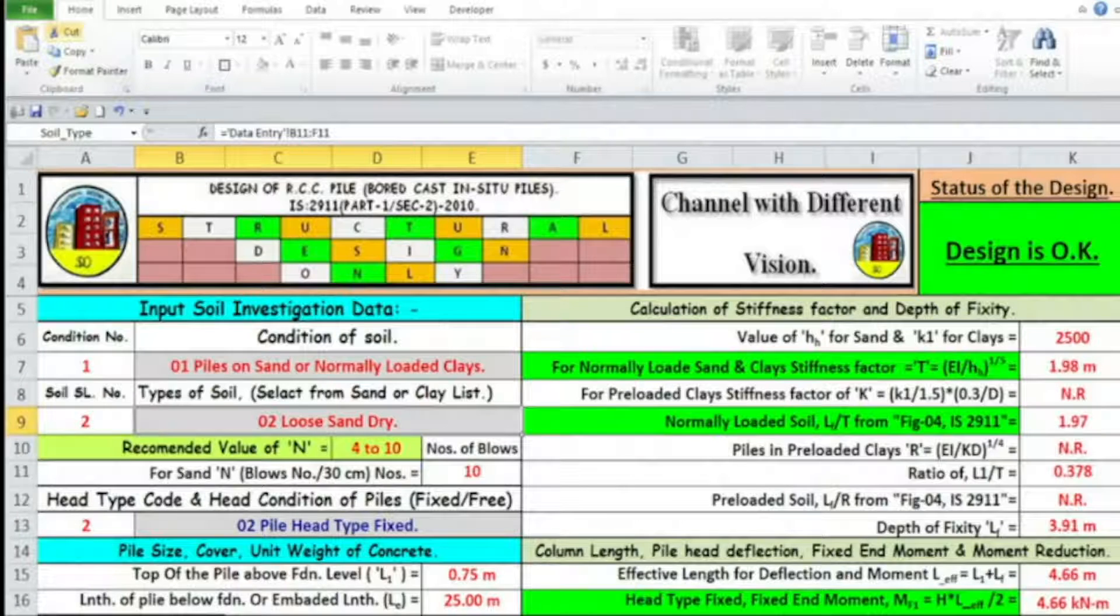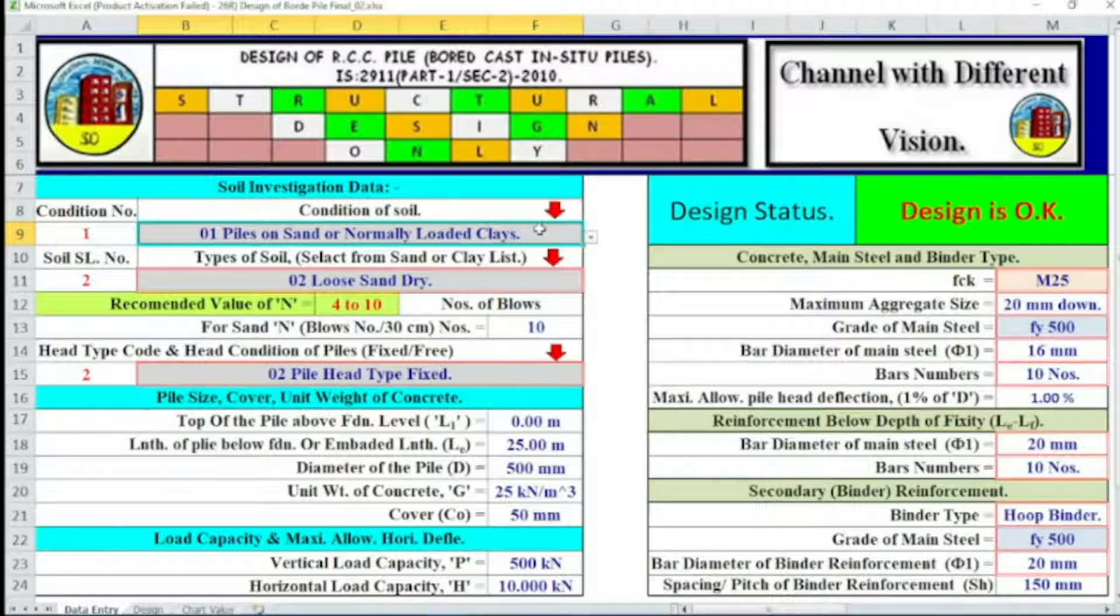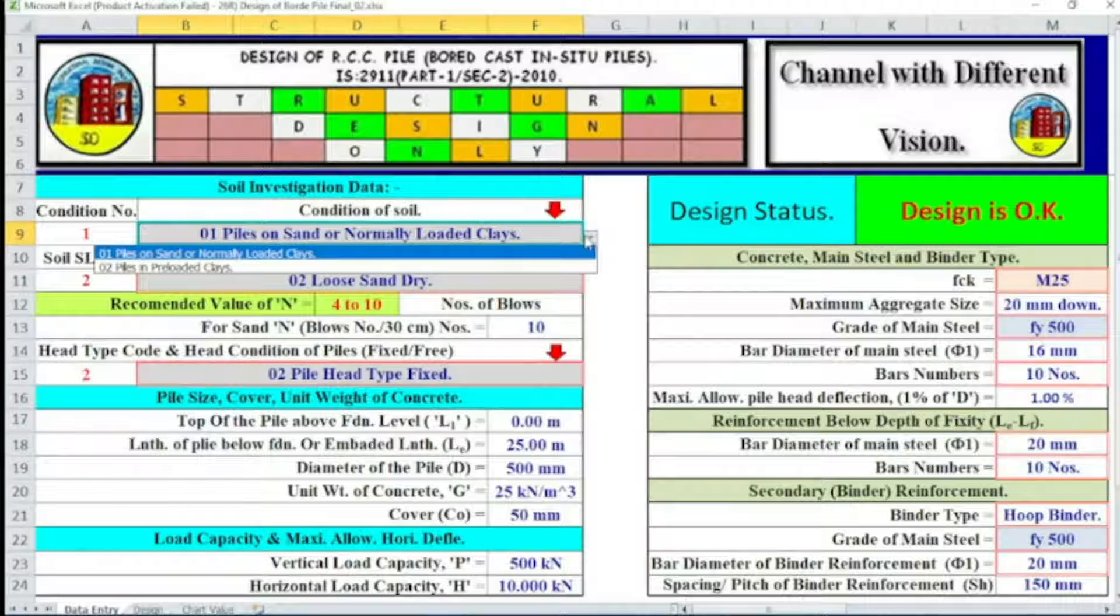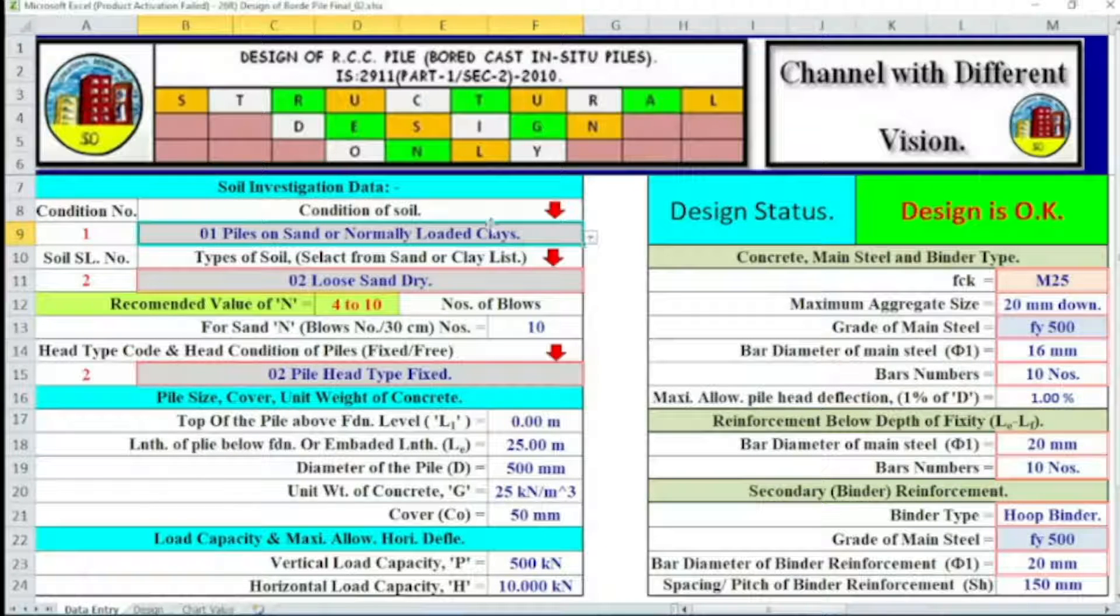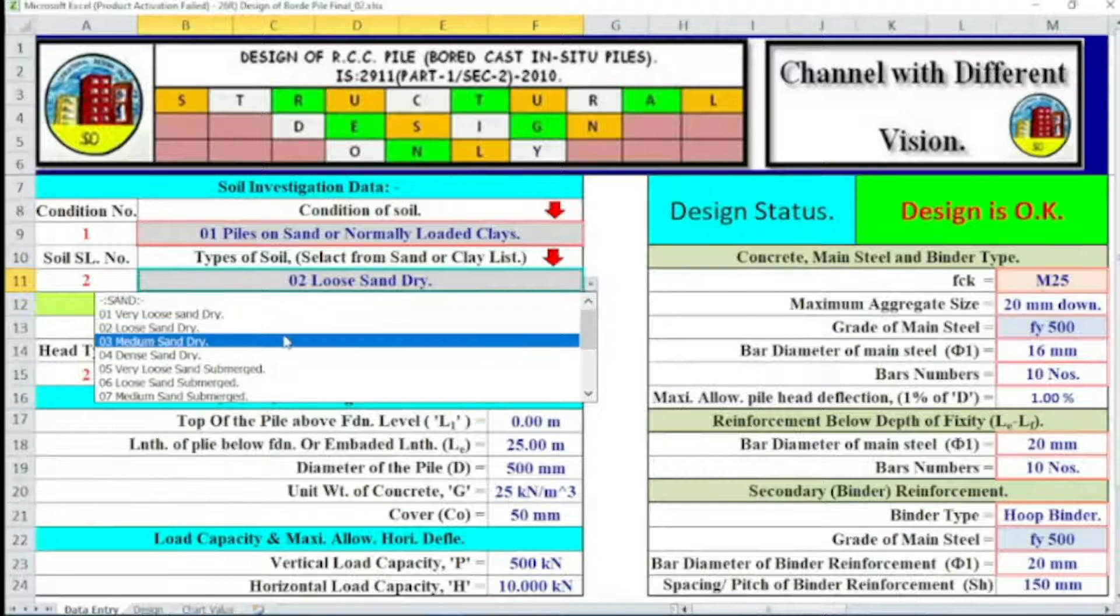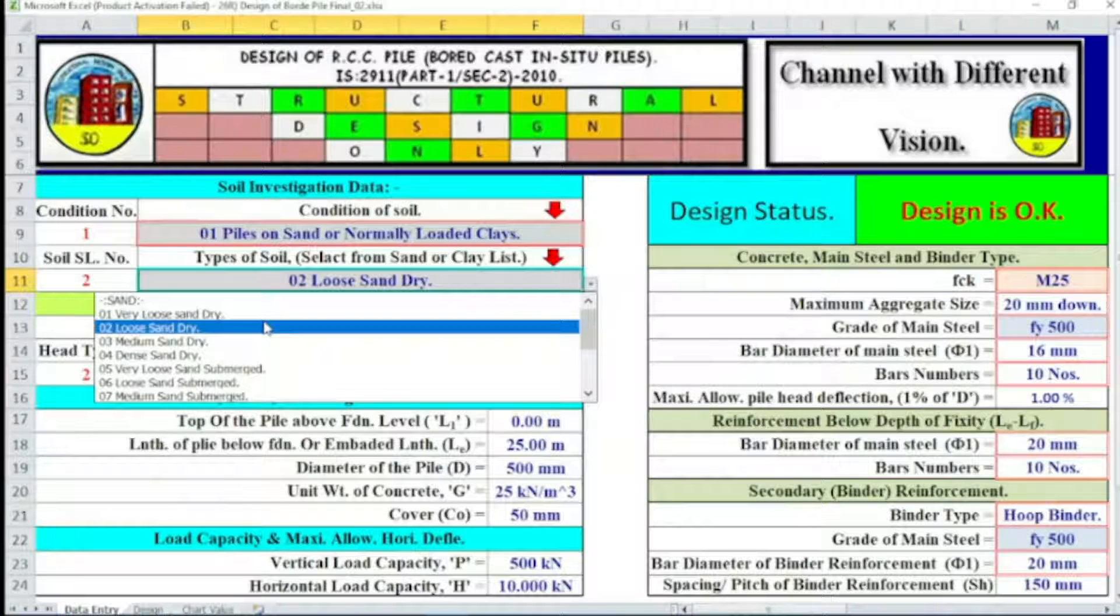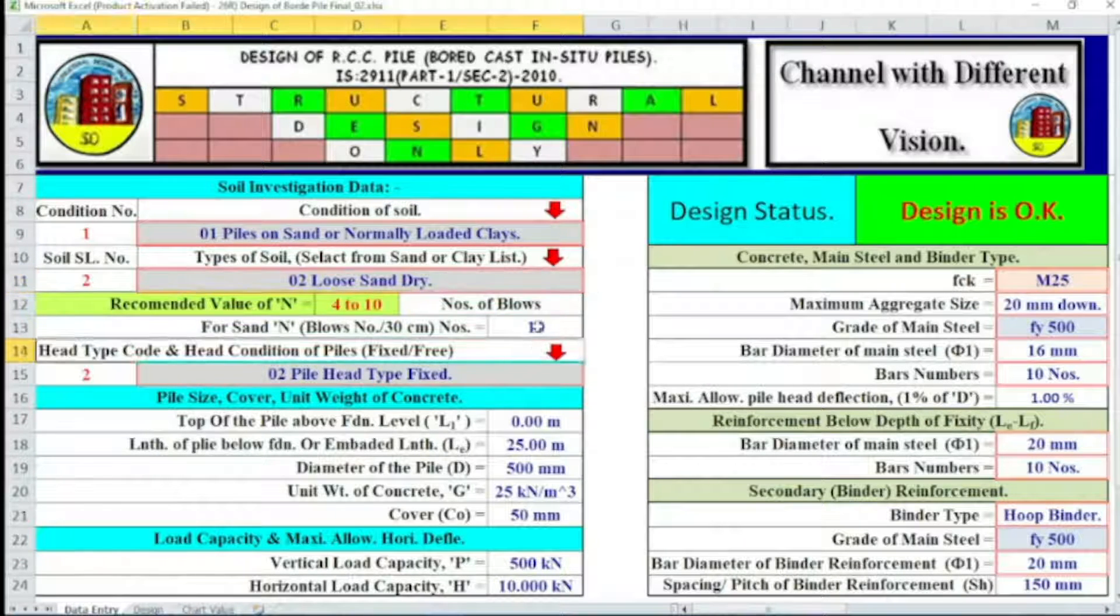Welcome to my Excel spreadsheet. This is our data entry system. First, from pile investigation report, we have to decide what kind of pile. That is condition of the soil. We have two conditions: pile on sand or normally loaded clay, and pile in preloaded clay. We are considering pile on sand or normally loaded. Second, type of the soil. Say we are considering pile on sand and loose dry sand. Recommended N value, suppose we change it here.